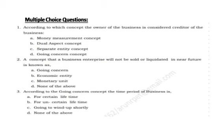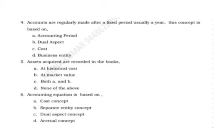Next question: accounts are regularly made after a fixed period, usually a year. This concept is based on — accounting period, dual aspect, cost, or business entity? Accounting is made on a yearly fixed time period basis, so the answer is accounting period.